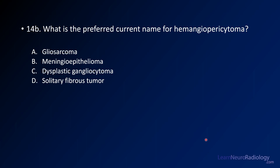Your second question is: what is the current preferred name for hemangiopericytoma? The name of hemangiopericytoma has changed in recent nomenclature. The options are: gliosarcoma, meningoepithelioma, dysplastic gangliocytoma, or solitary fibrous tumor.